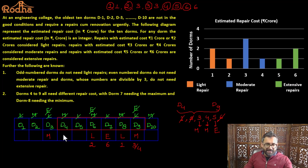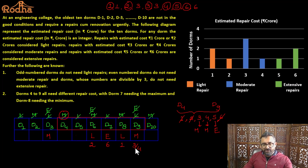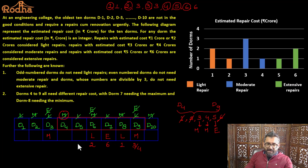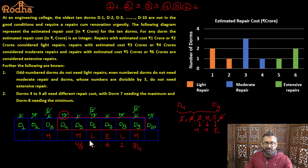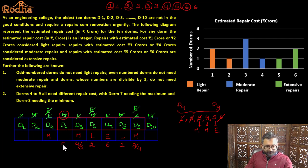Since DOM 4 is even, it cannot have moderate repair. So DOM 4 cannot be assigned 3 or 4 crore. Whether I use 3 or 4 for DOM 5, the other goes to DOM 9 — either way DOM 5 requires moderate repair. The only number left for DOM 4 is 5 crore, making it extensive repair.